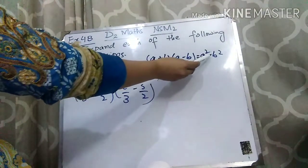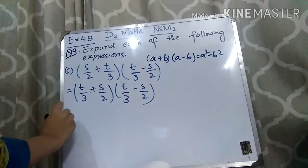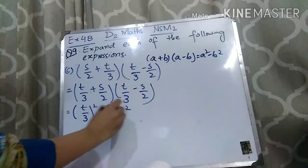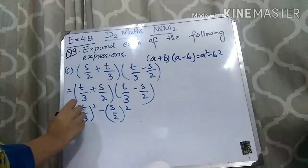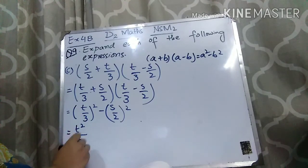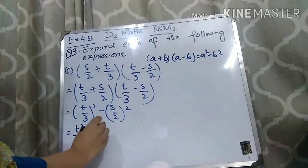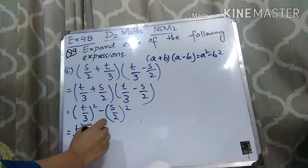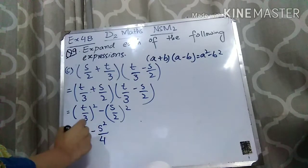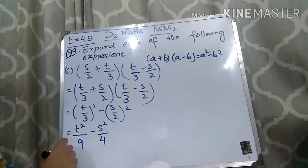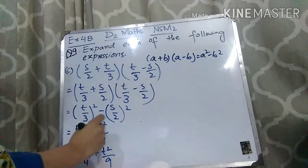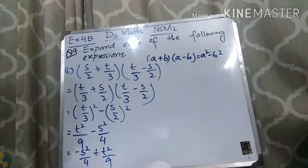Applying the formula A plus B times A minus B equals A squared minus B squared: take the square of numerator T to get T squared, and the square of denominator 3 — 3 times 3 is 9 — giving T²/9. Minus: take the square of numerator S to get S squared, and the square of denominator 2 — 2 squared is 4 — giving S²/4. In your book the answer is written as −S²/4 + T²/9 in alphabetical order, but both forms are correct.